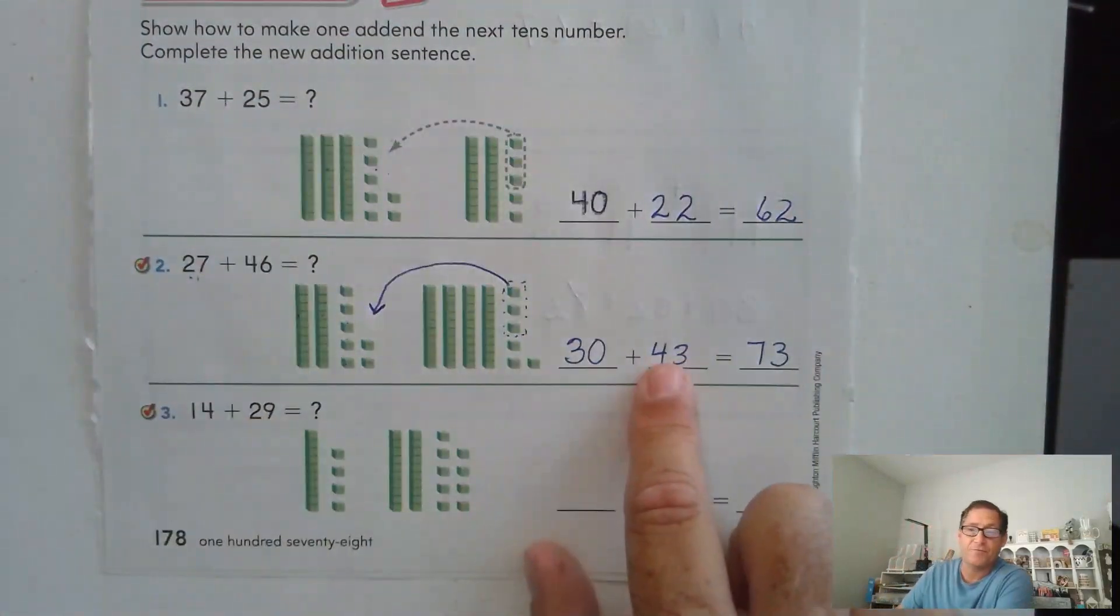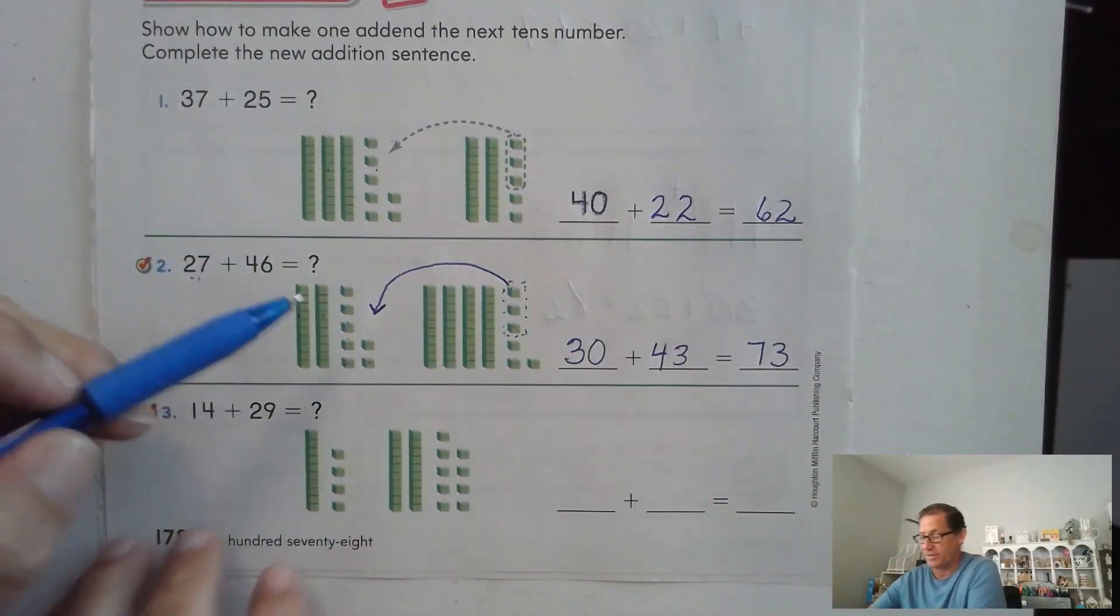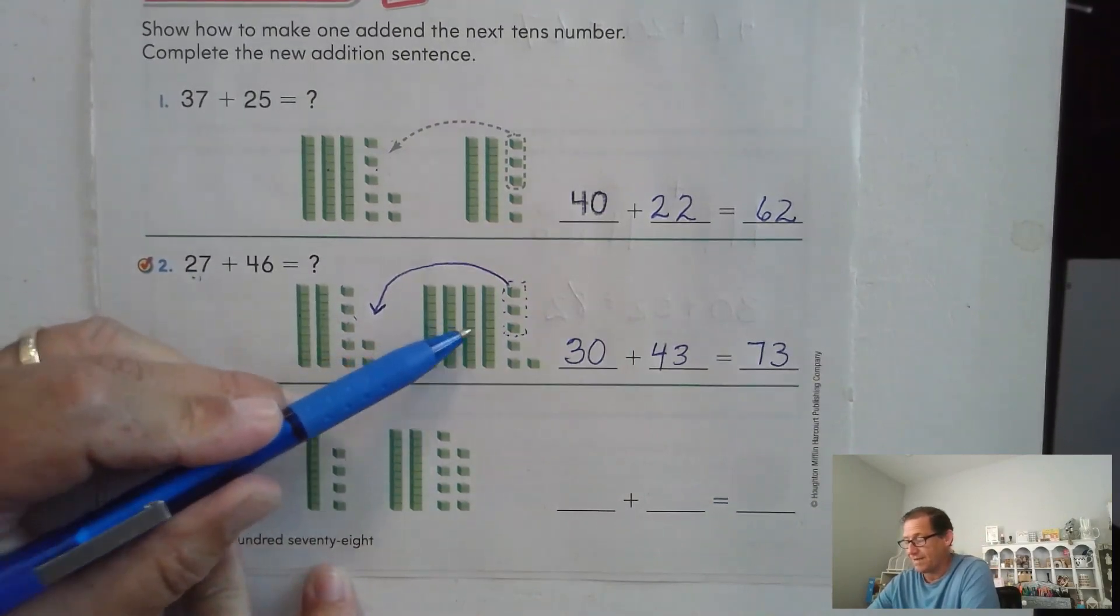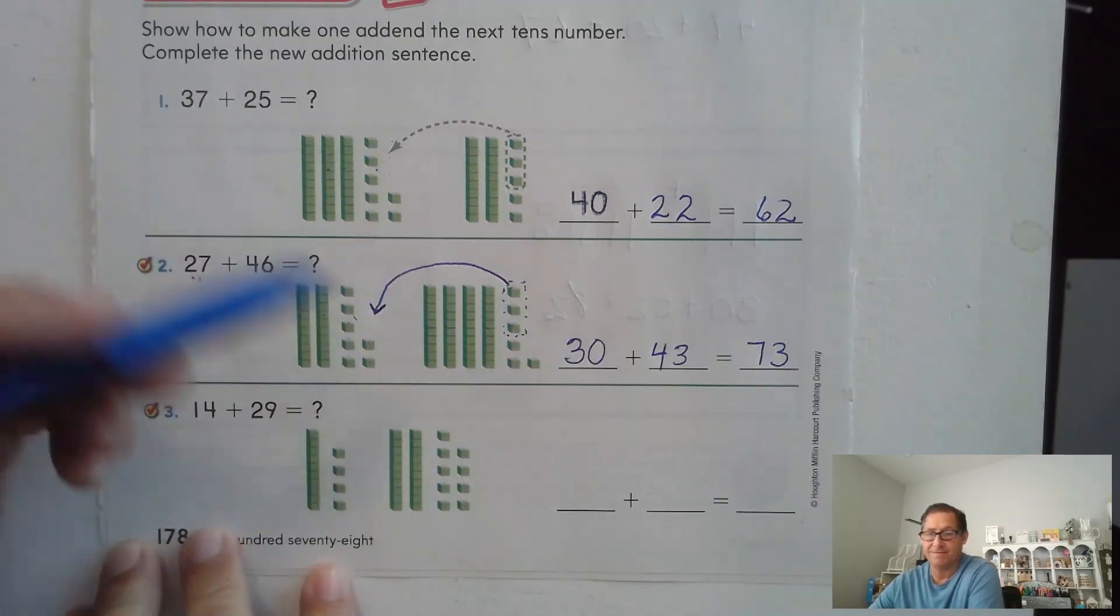All I did was add three tens to four tens. And we can count them here too. One, two, three, four, five, six, seven. Seven tens is 70, and we have three ones, 73.